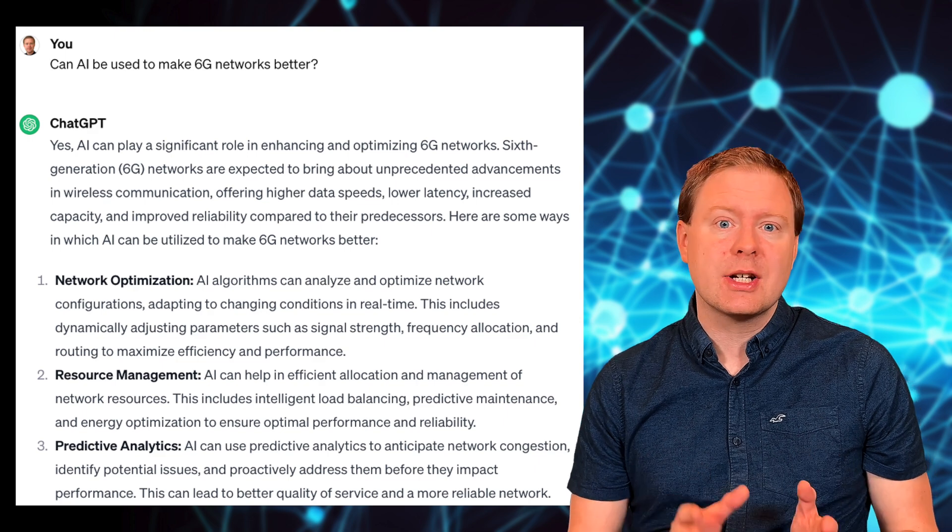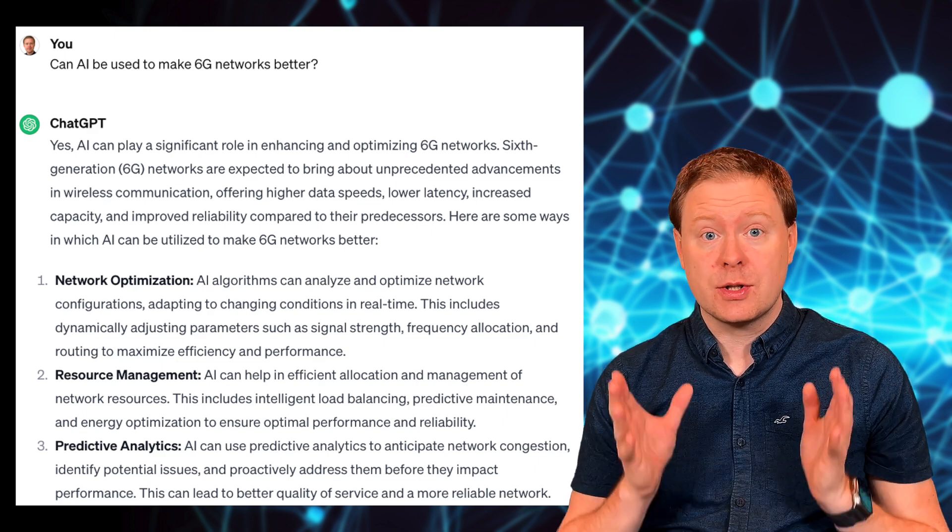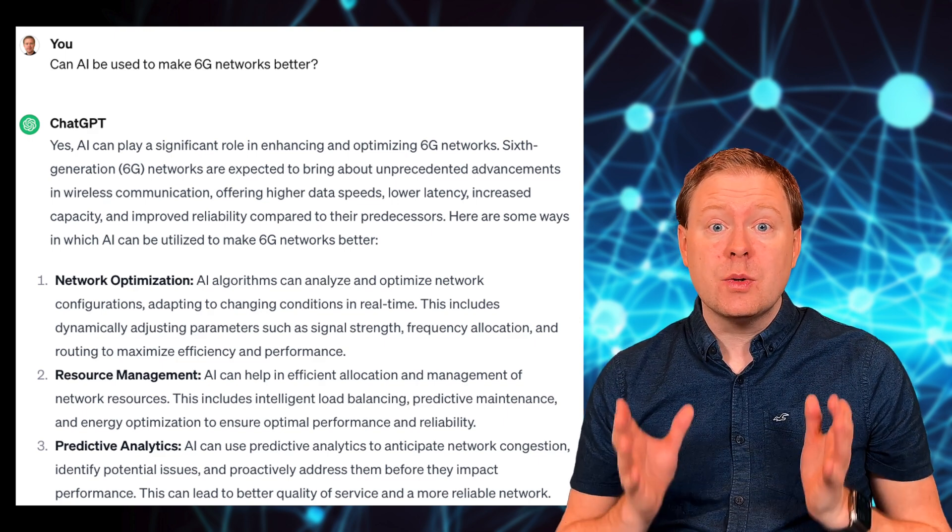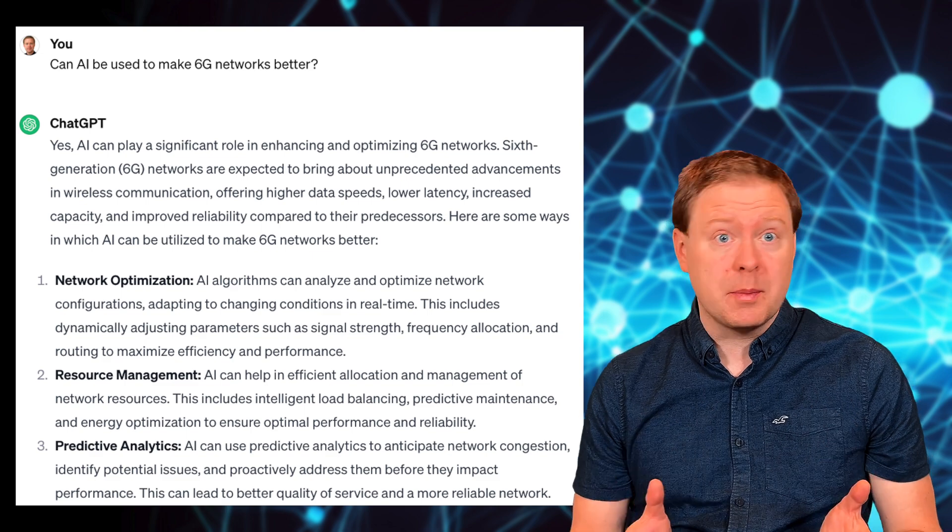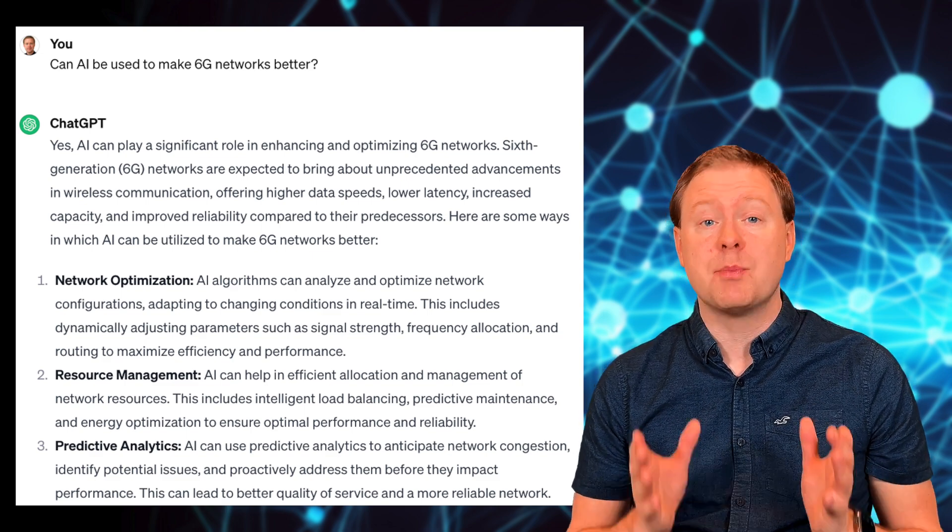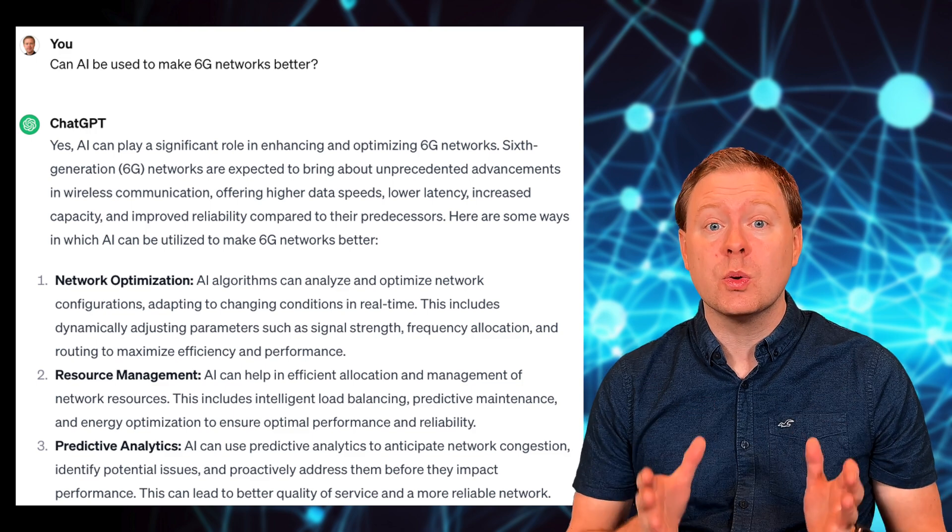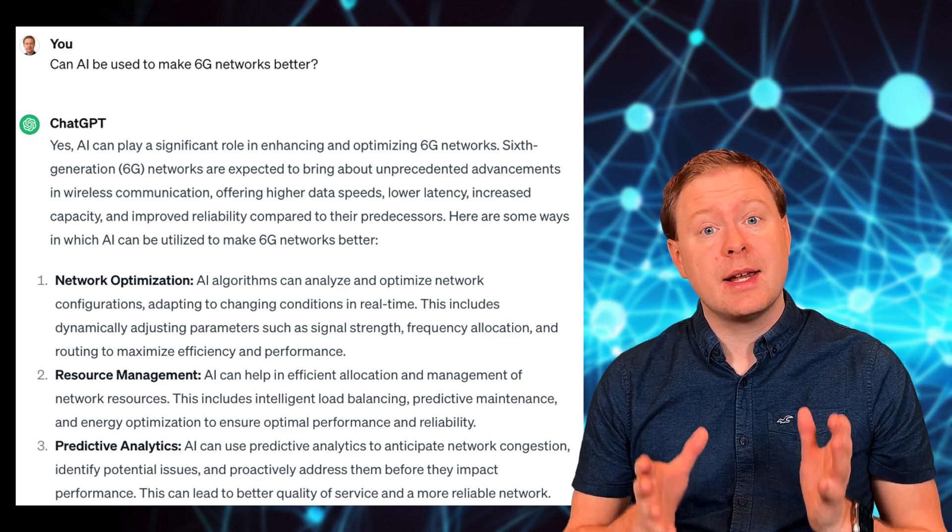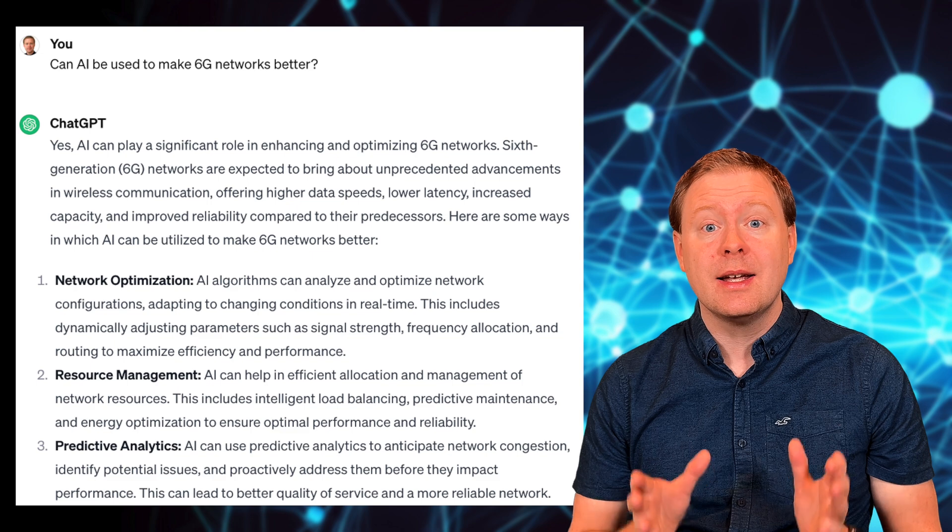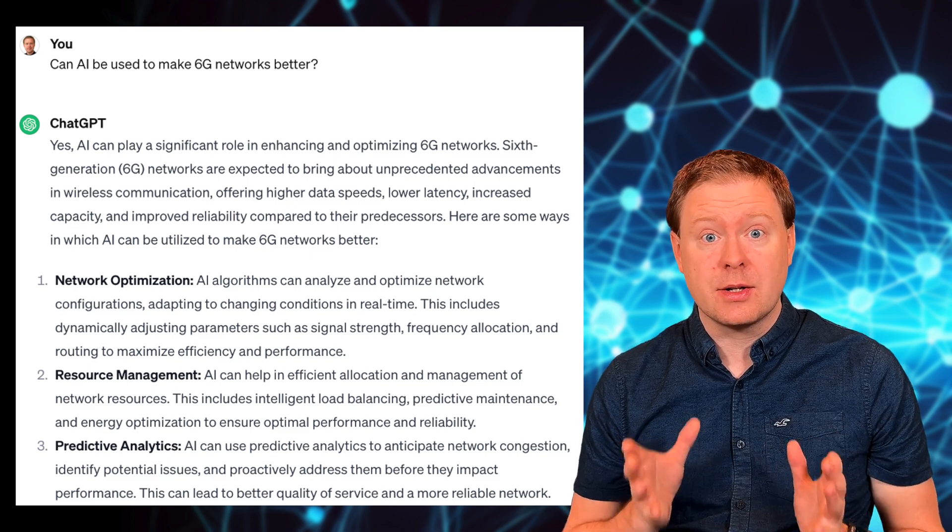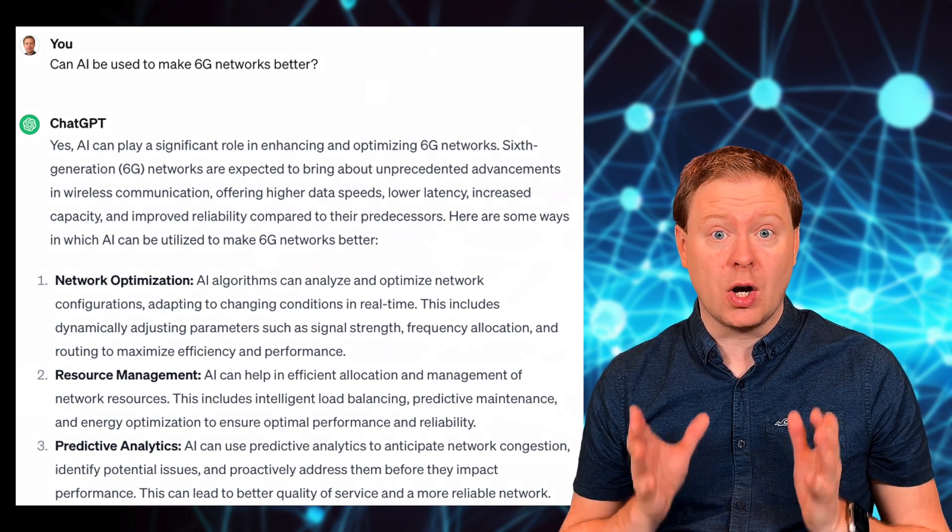If you ask ChatGPT can AI be used to make 6G networks better, the answer is certainly yes. And the use cases are things like network optimization, resource management, predictive analytics. And these are things that we already do in the networks of today, which is just an example of how AI makes existing things better, but it's not groundbreaking on its own.